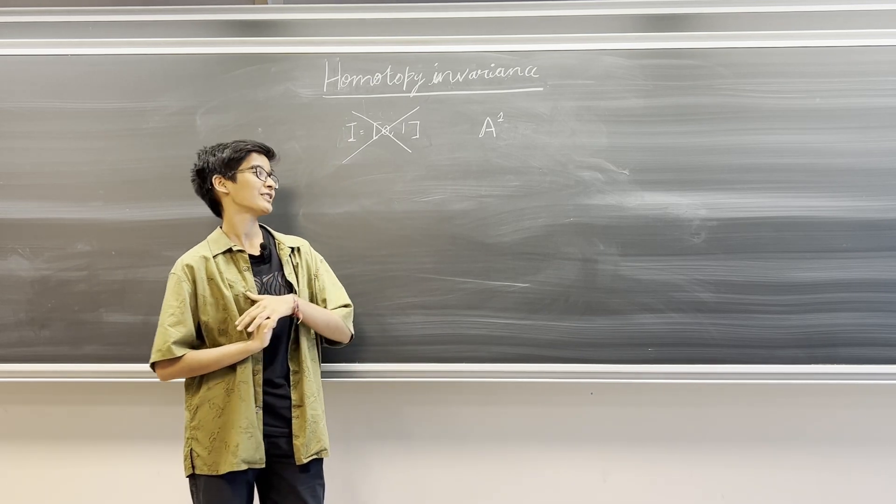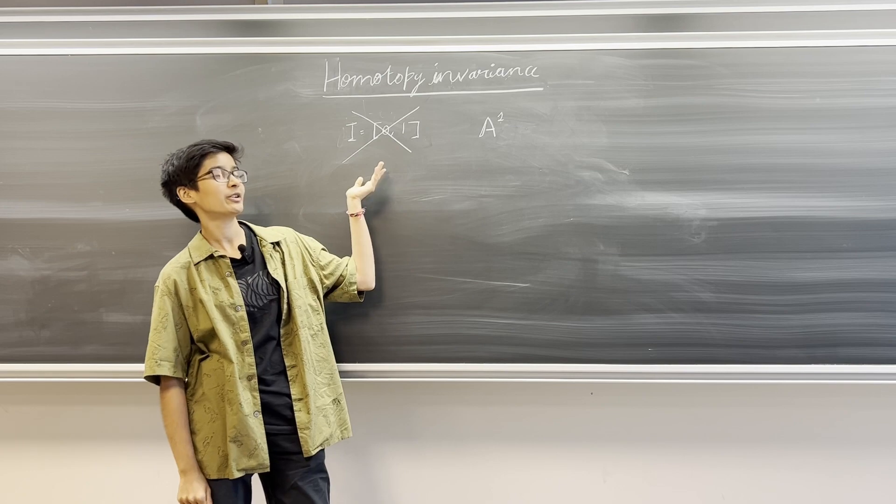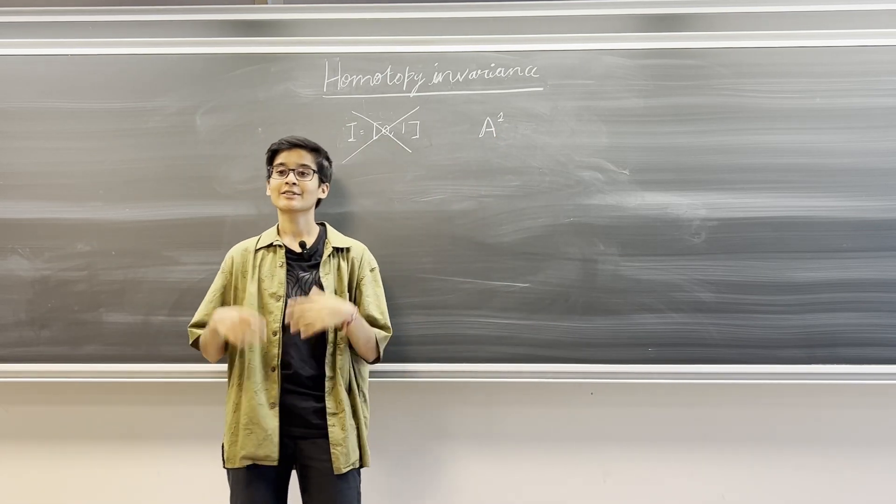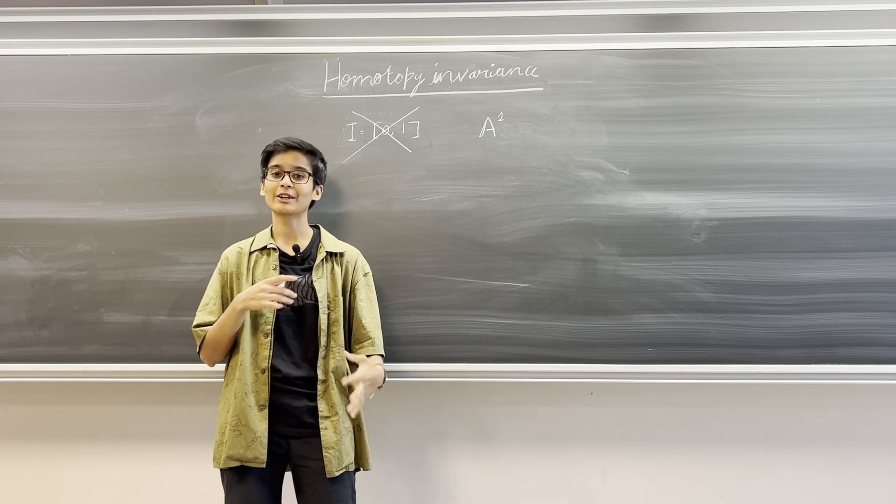To discuss homotopy invariance in algebraic geometry, we replace the unit interval by something known as the affine line, which is denoted by A1. And suppose we have an invariant that takes values in varieties.